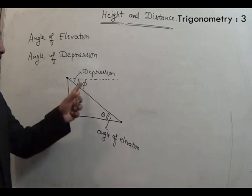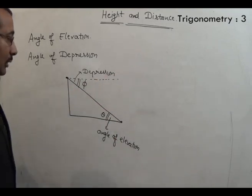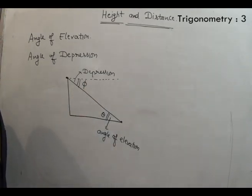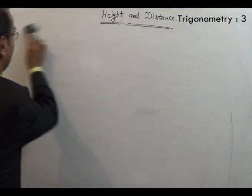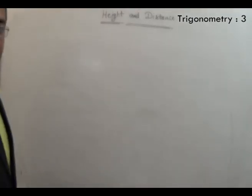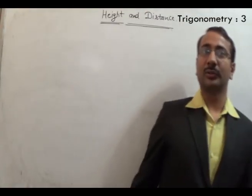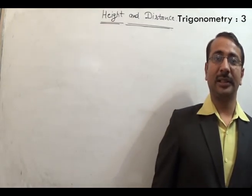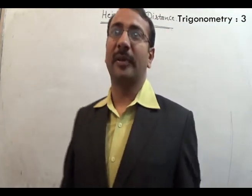Value-wise, both angles are the same because these two surfaces are parallel. Both are known as alternate angles, so we can say both are equal. Now in this topic we have some standard practical problems. I will discuss them one by one. Try to make a figure in your mind because all these questions are primarily based on figures. If you can easily draw the figures, you can easily answer the questions.